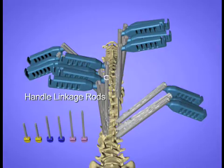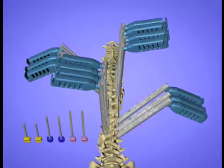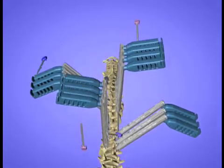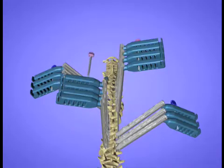The slots in the handles of the derotators are aligned manually. A handle linkage rod slides through the innermost set of slots in the handles.